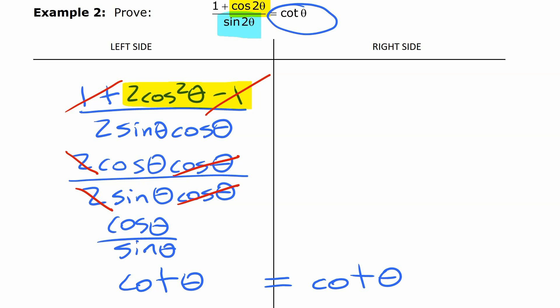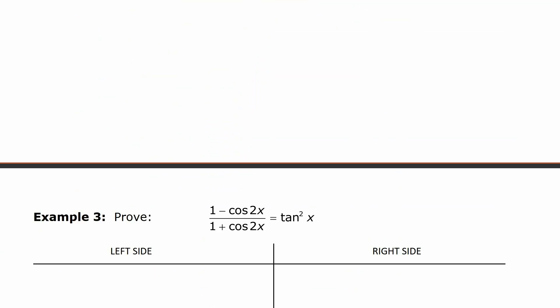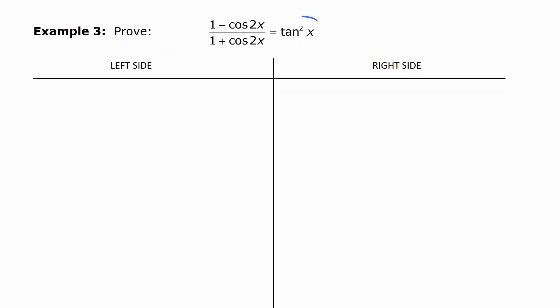Alright. Again, this would be pretty hard to start on that right side and make it look like the left side — it could be done, but you'd be making things more and more complicated as you go. So that's probably the best approach, working on the left. One more here. This one is similar, with a fraction on the left, but it only involves double angle identities for cosine, and it's tan squared on the other side — we'll see how that comes about as we go.